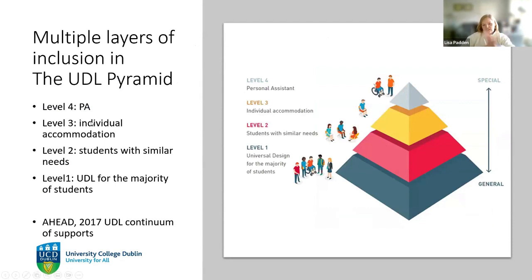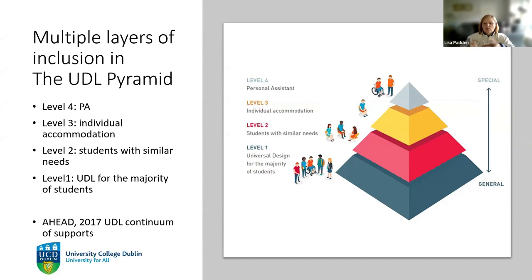There are multiple layers with this UDL pyramid, developed back in 2017. What we're trying to do is support every student on the bottom layer as much as possible. Universal design will give you something that works for most students, and as we go up the layers, there'll be fewer and fewer students who need those individual interventions — things like assistive technologies, financial supports, individual exam accommodations. We should always be thinking of ways to have students on that bottom layer.